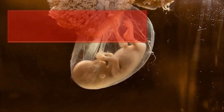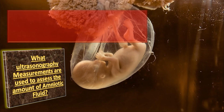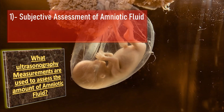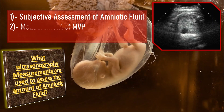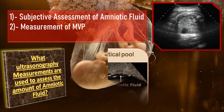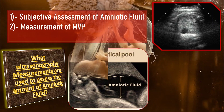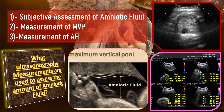What ultrasonographic measurements are used to assess the amount of amniotic fluid? Those measurements are done by using three methods. First, subjective assessment of amniotic fluid. Second, measurement of maximum vertical pool. Third, measurement of amniotic fluid index.